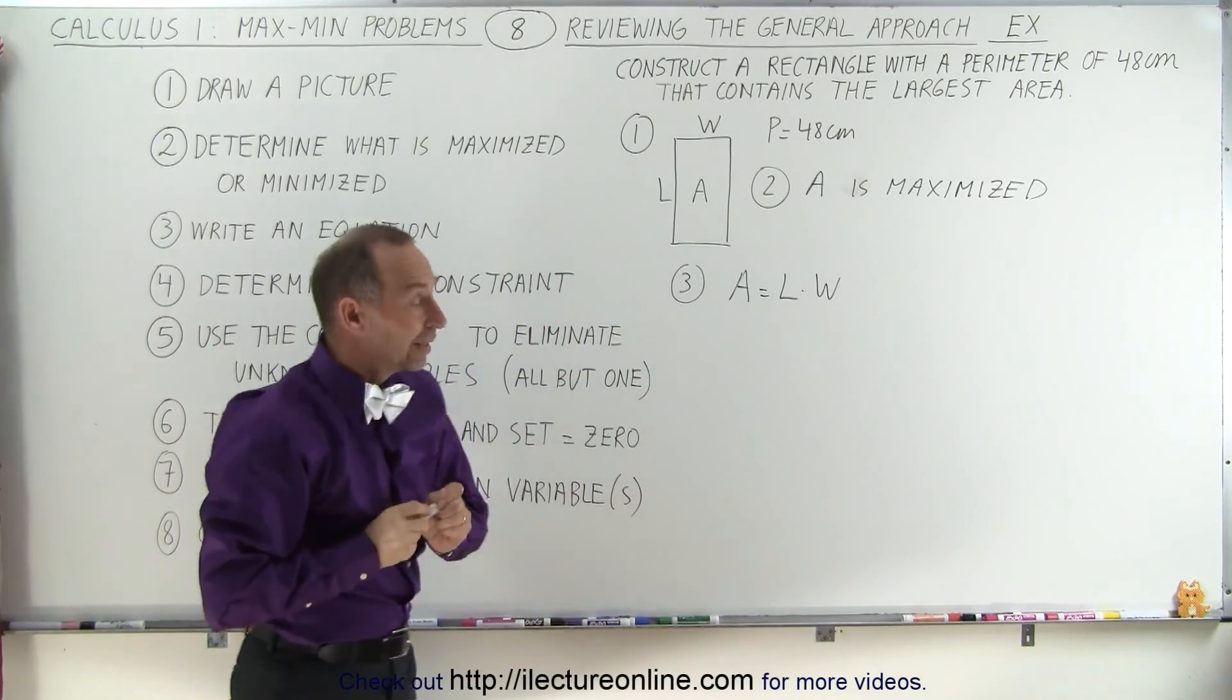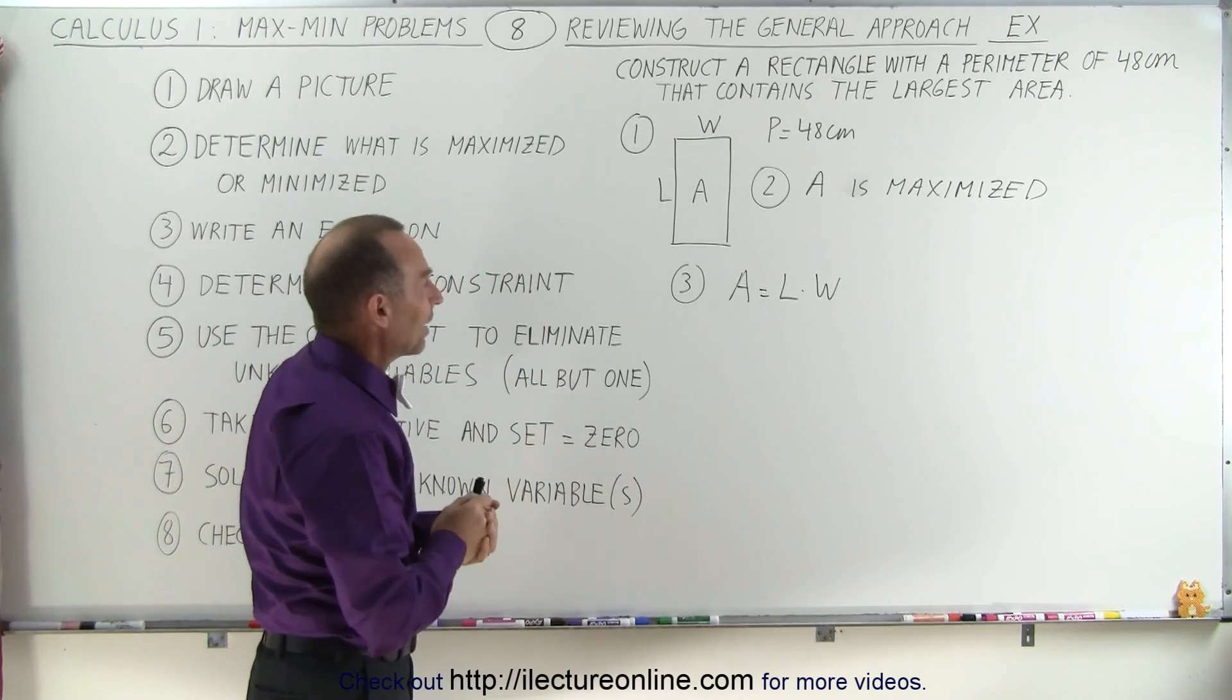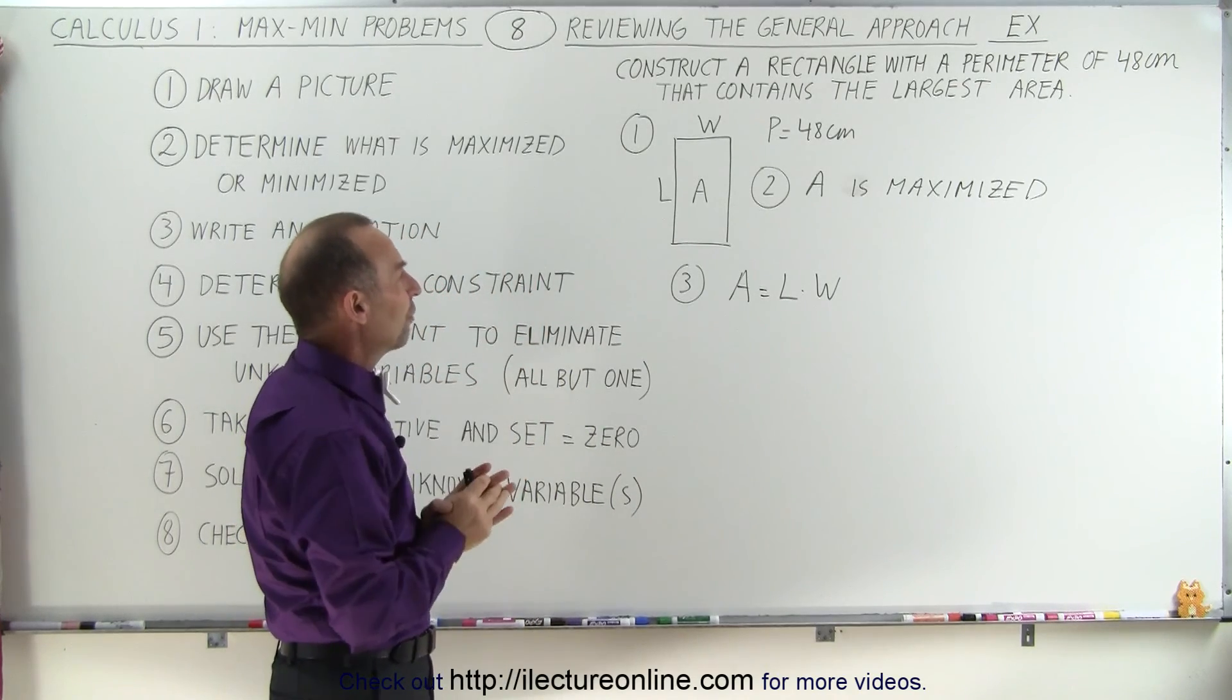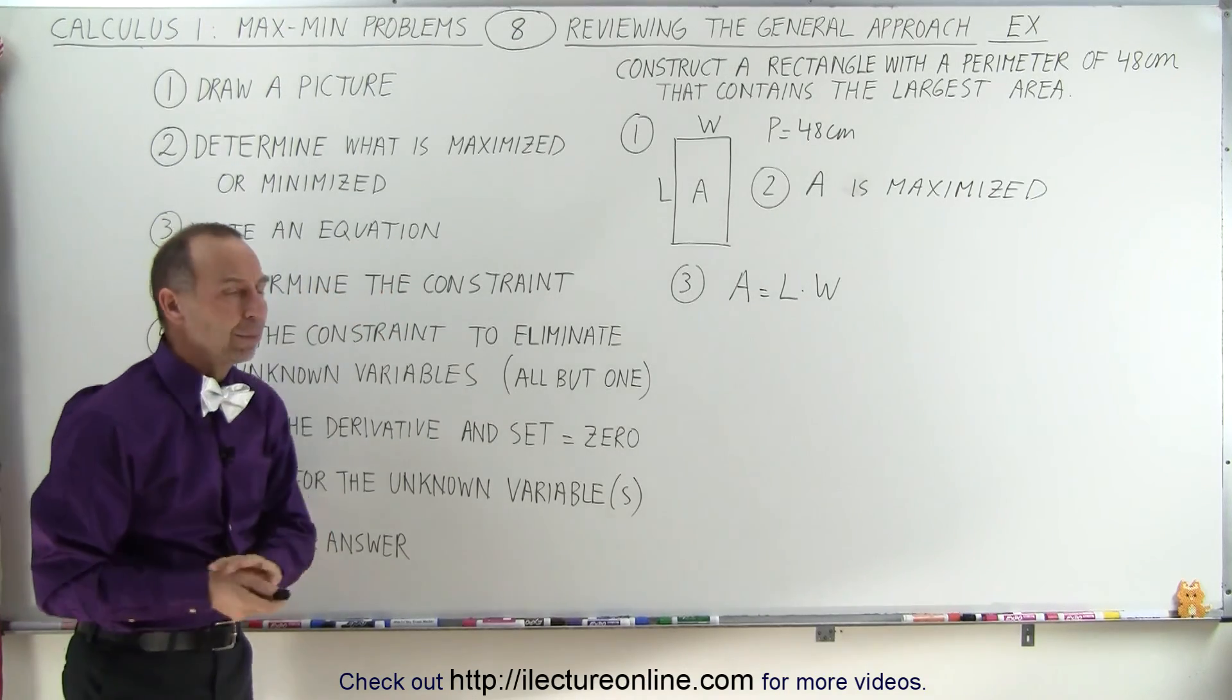Now we realize that it's now a function of two variables, which we cannot take the derivative of. So we need to eliminate one of the two variables. To do that, we need to determine the constraint of the problem.